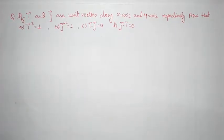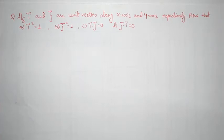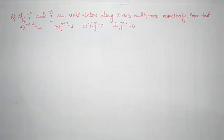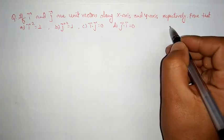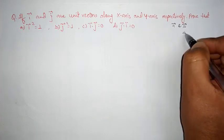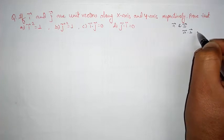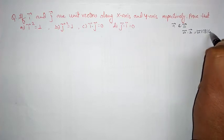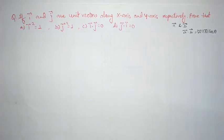If i vector and j vector are unit vectors along the x-axis and y-axis respectively, prove that i vector squared equals 1, j vector squared equals 1, i vector dot j vector equals 0, and j vector dot i vector equals 0. This problem is related to the scalar multiplication of two vectors. As we know, if vector a and vector b are two vectors, then the scalar product is given by a dot b equals magnitude of vector a into magnitude of vector b into cos theta.